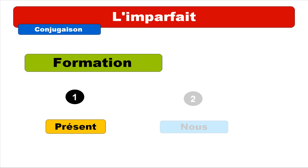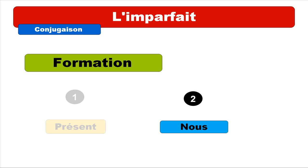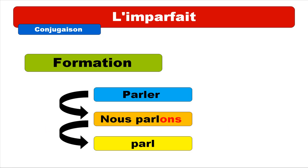The idea is that first you will have to master and know quite well — by heart of course — the present form of the verb you want to conjugate. The second thing is that you need to know by heart the 'nous' form at the present tense of this verb.